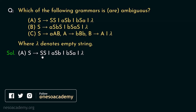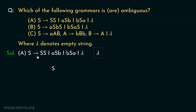Let's begin with grammar A. S can be rewritten as SS, ASB, BSA, or lambda. Let's try to derive the empty string, lambda. Starting from the start symbol S, using the first production S → SS, we derive SS. Then using S → lambda, we can derive lambda from both S's.